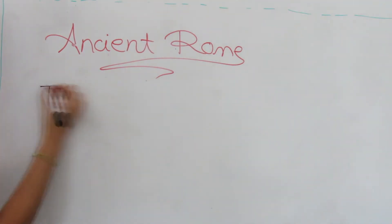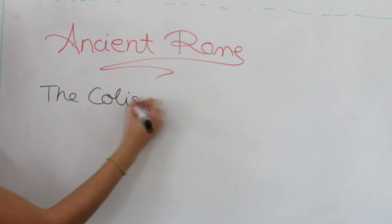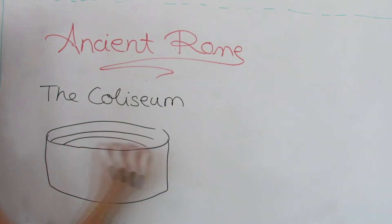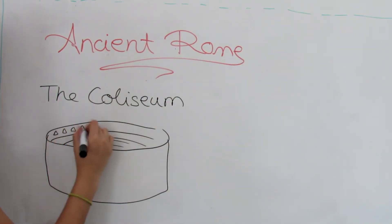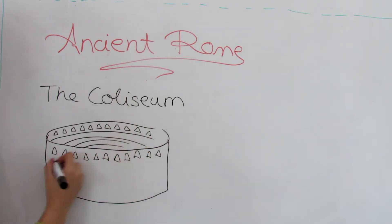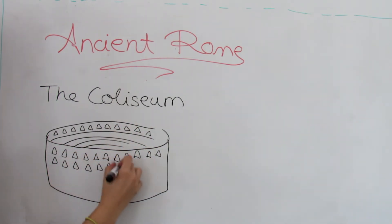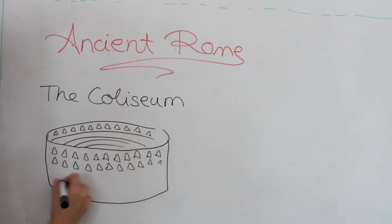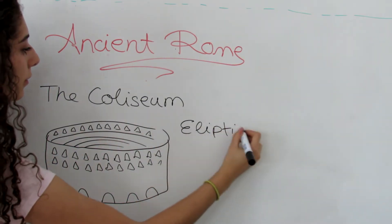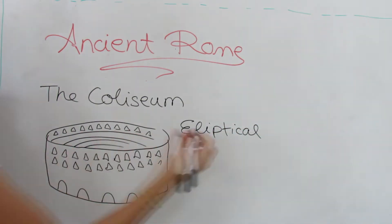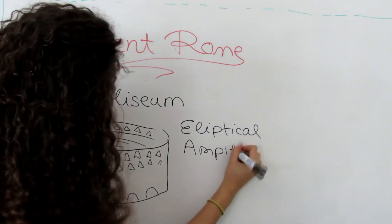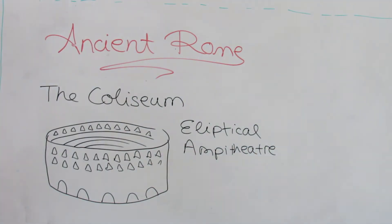The Colosseum is an elliptical amphitheatre in the center of the city of Rome, built of concrete and stone. It is the largest amphitheatre ever built, and is considered one of the greatest works of architecture and engineering.